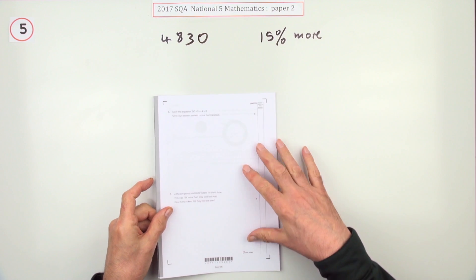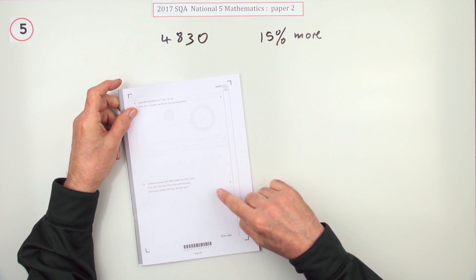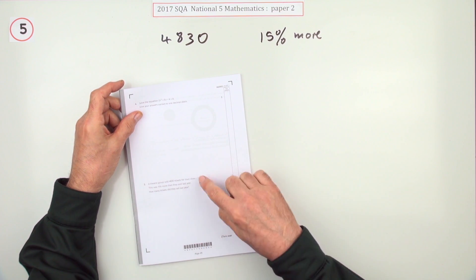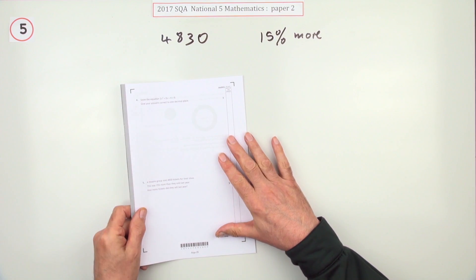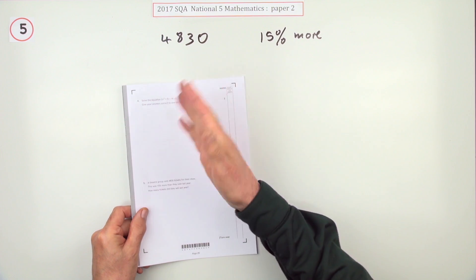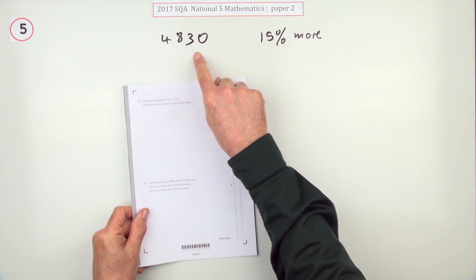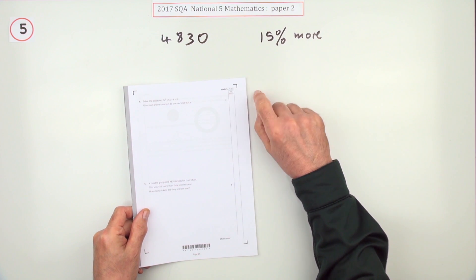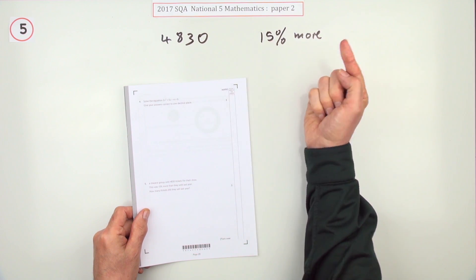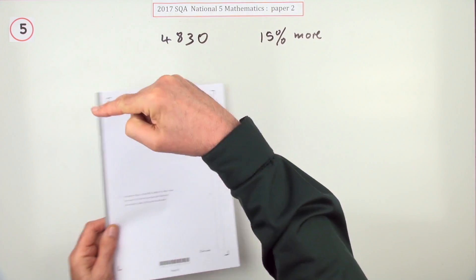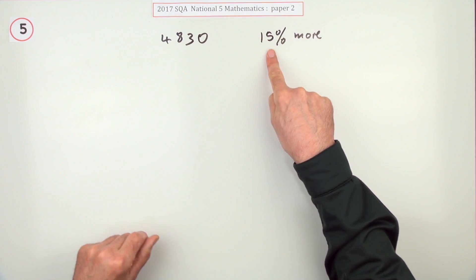Number five from paper two of the 2017 National 5, three marks, the reverse percentage. A theater group sold 4830 tickets, that was 15% more than last year. What did they sell last year? So it's a reverse percentage. Don't just find 15% and take it off, because 15% of this is more than 15% of the original value which was smaller.